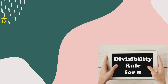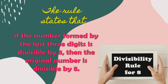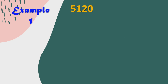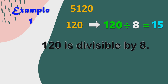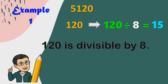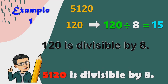Next is the divisibility rule for 8. The rule states that if the number formed by the last three digits is divisible by 8, then the original number is divisible by 8. For example, we have 5,120. We are going to identify if 5,120 is divisible by 8. The last three digits of 5,120 is 120. Is 120 divisible by 8? Since the last three digits of 5,120, which is 120, is divisible by 8, then we can say that 5,120 is divisible by 8.